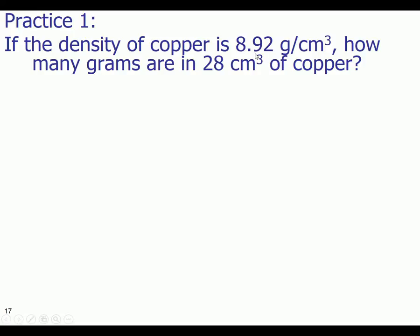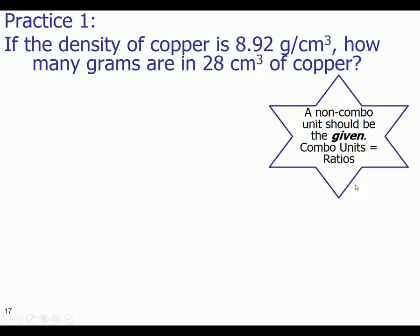Do you notice how this is a single unit and this is a combo unit? I call it a combo unit because there's a g forward slash cubic centimeter. This unit is a combination of two different units. As a rule of thumb, a non-combo unit should be the given, and your combo units will serve as ratios.